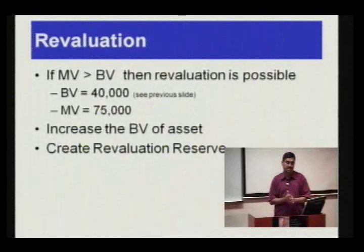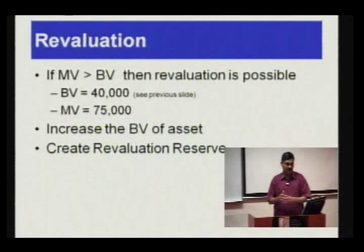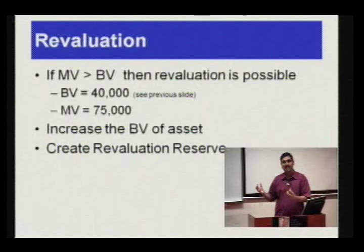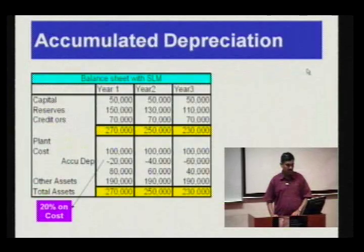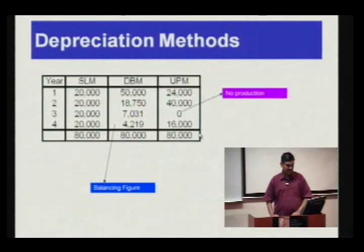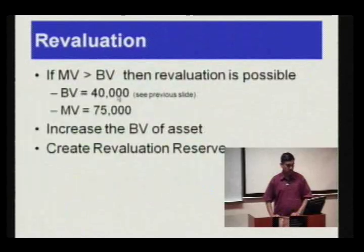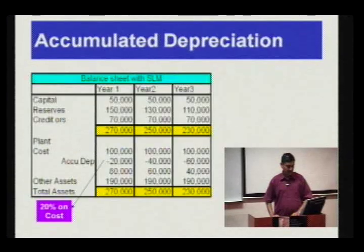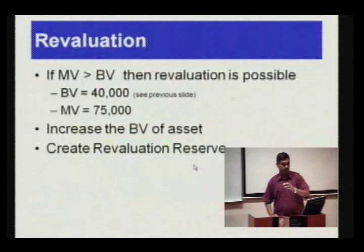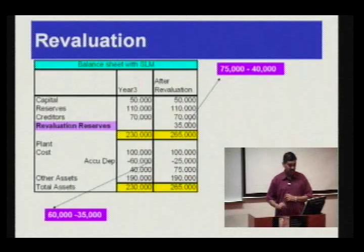The second issue for today's discussion is revaluation. If the market value of an asset is greater than the book value, then the business can revalue the assets, but the revaluation should be shown as a reserve on the balance sheet. For example, suppose the market value of the asset is 75,000 but the book value is 40,000 — as in this case at the end of the third year. The revaluation figure is 75,000 as market value. How will that be shown on the balance sheet?